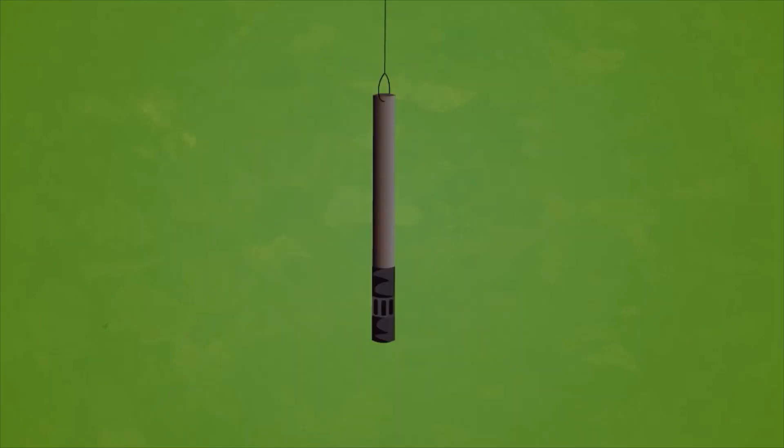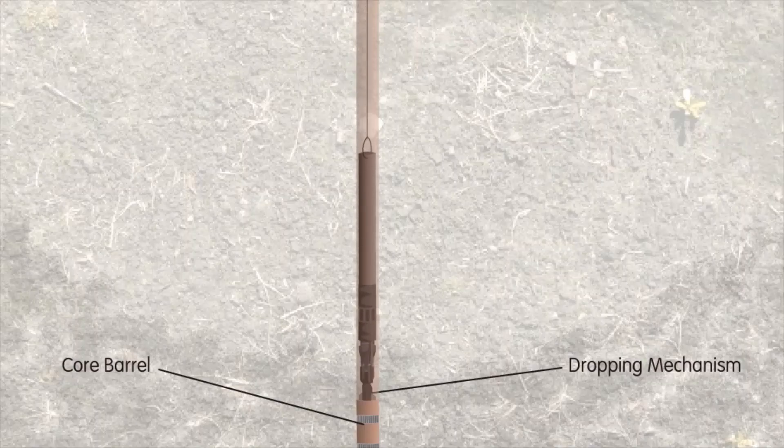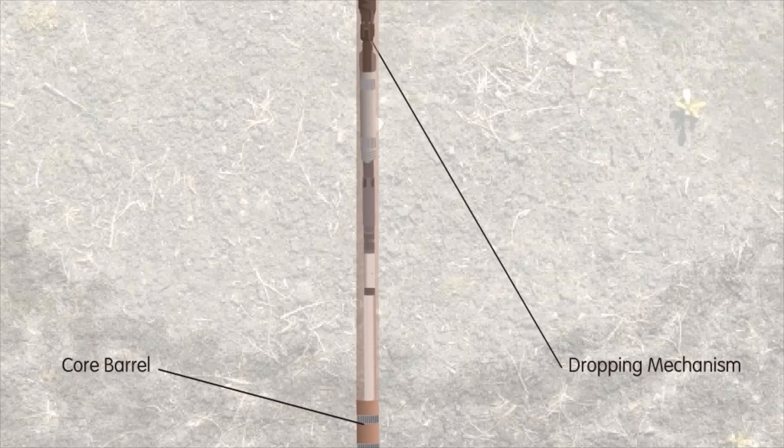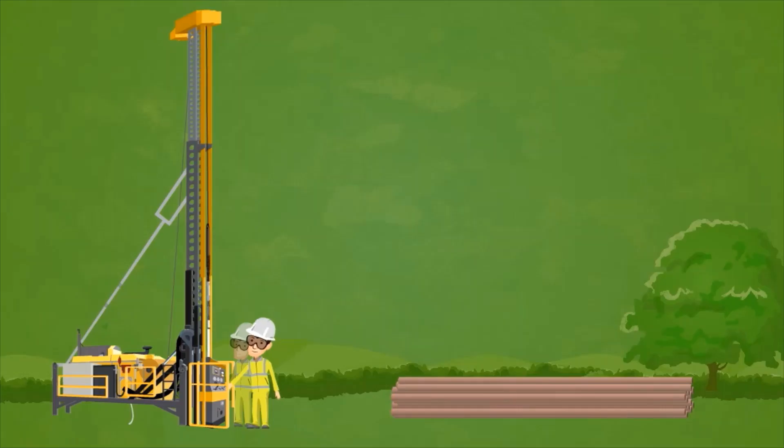Now you need to remove the dropping mechanism by changing the retriever to the quad latch retriever supplied. Lower the quad latch retriever and remove the dropping mechanism from the core barrel. Then replace with your inner tube and you are ready to drill past the wedge.